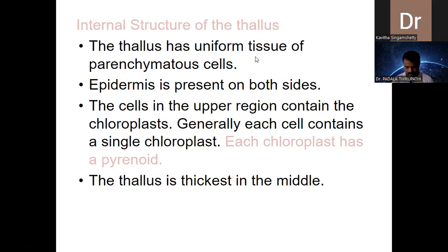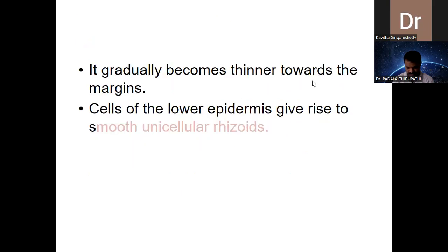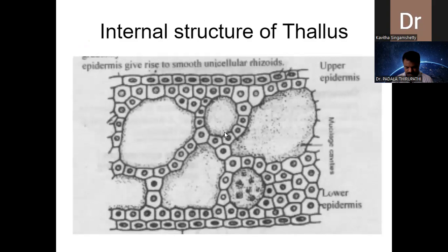This is also a dorsiventral thallus, unlike Marcantia. We can see the upper and lower epidermal regions. Between them is parenchymatous tissue where the mucilaginous cavities are present on the ventral side, enclosing Nostoc colonies. The thallus is thickest in the middle and gradually becomes thinner towards the margin. The upper cells contain chloroplast for photosynthesis; the lower epidermal cells give rise to smooth unicellular rhizoids.